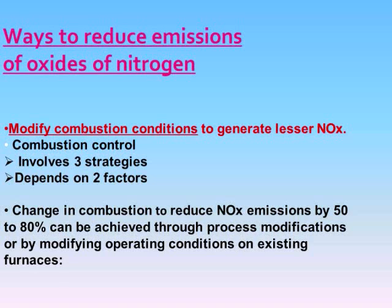The first way to reduce emissions of oxides of nitrogen is to modify combustion conditions to generate lesser NOx. Combustion control may involve any 3 strategies: reducing peak temperatures in the combustion zone, reducing gas residence time in the high temperature zone, and reducing oxygen concentrations in the combustion zone. The method of combustion control used depends on two factors: the type of boiler and the method of firing fuel.